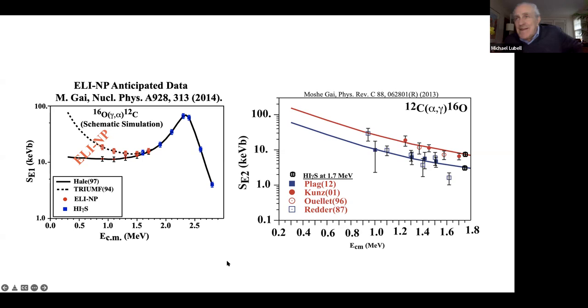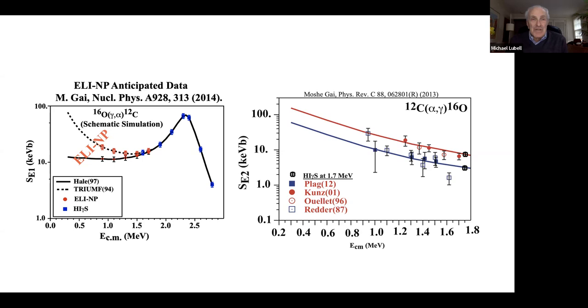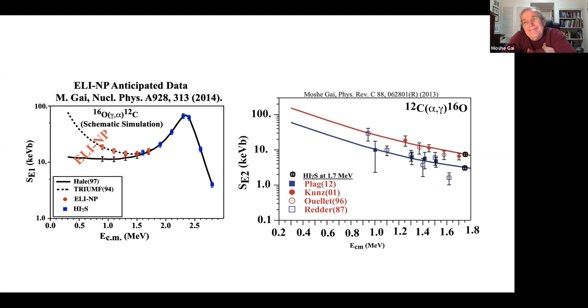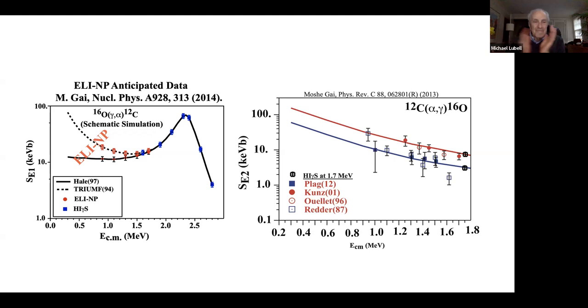Every nuclear physics long-range plan - 2011, 2015, and the upcoming one - lists C12(α,γ) as the number-one problem in nuclear physics, first measured in 1974. The host thanks Moshe and notes this is a very serious question that his collaborators are addressing - one that proves technology must keep pace with the quest for knowledge.